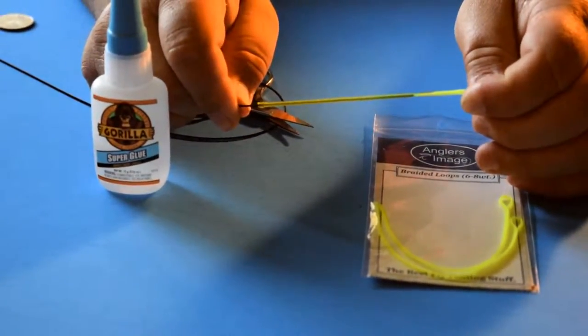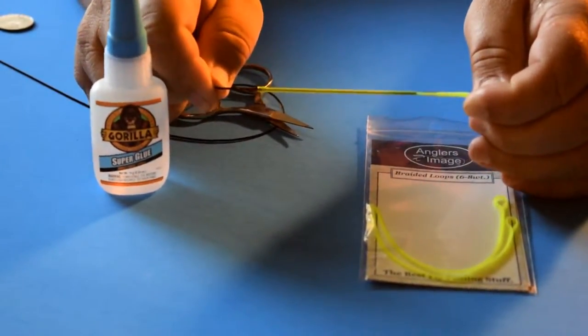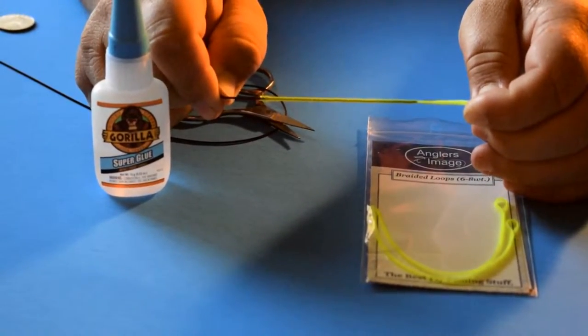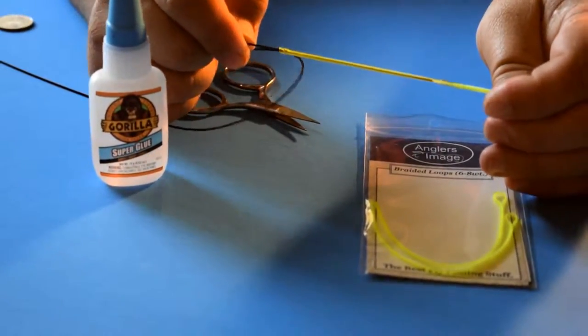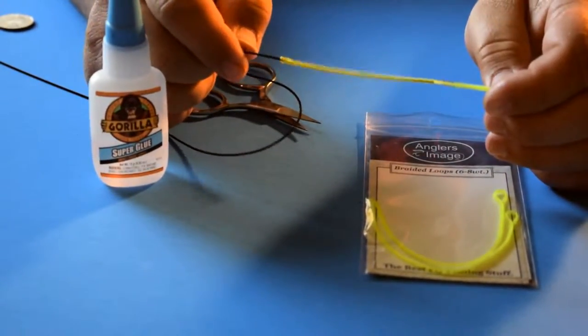if you pull on this, this is not coming apart. I'm pulling pretty hard on this right now. So it's really like Chinese handcuffs. Once you put it in there, it doesn't want to come loose. And I've never had one of these slip loose with a fish.